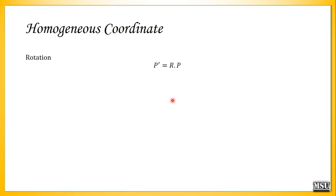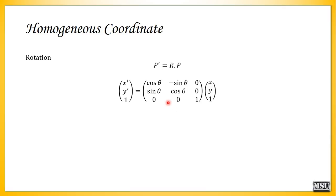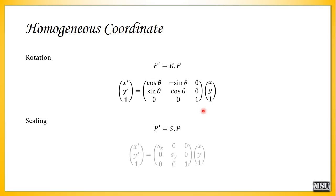Rotation is also changed to p' = R × p, making it the same 3×3 matrix form with 0, 0, 1 added. The formula is unchanged: x' = x·cosθ − y·sinθ, y' = x·sinθ + y·cosθ, and the homogeneous coordinate equals 1. Similarly for scaling: x' = Sx·x, y' = Sy·y, and 1 = 1.